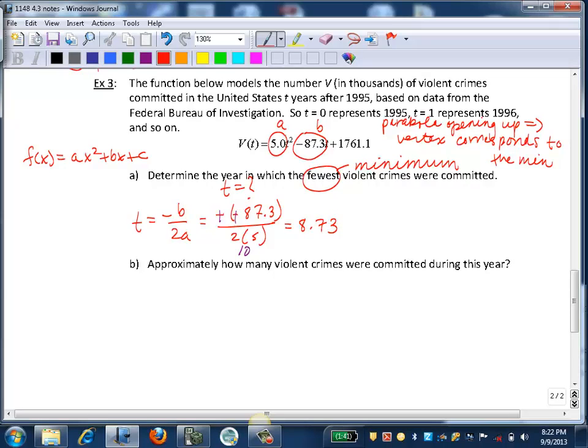So that means that 8.73 is the t value that corresponds to the vertex, the minimum of that parabola. So this is years, and remember this is years past 1995. So you can round this. It just depends on the problem as far as rounding. But if we take 1995 and we add 8.73, that would give us 2003.73.